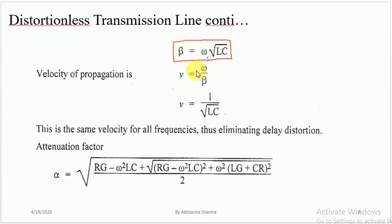The phase constant is β = ω√(LC). We already know that V = ω/β. Substituting the value of beta for the distortionless transmission line, β = ω√(LC), the omega cancels out, so the phase velocity is V = 1/√(LC). This is the same velocity for all frequencies, thus eliminating delay distortion.